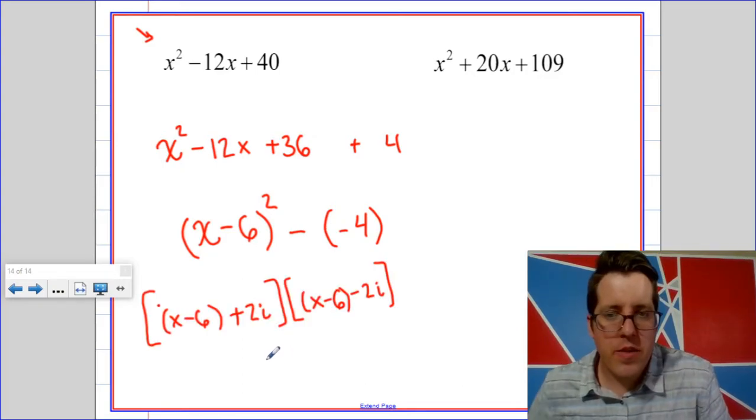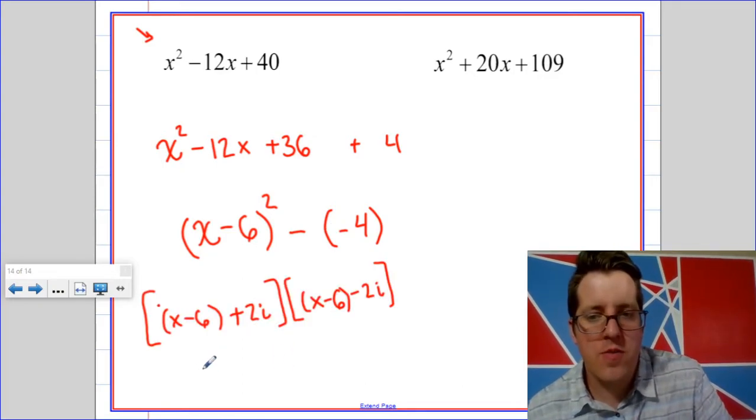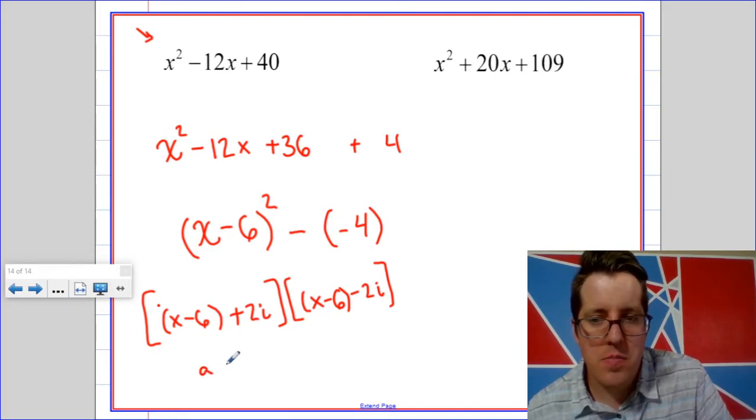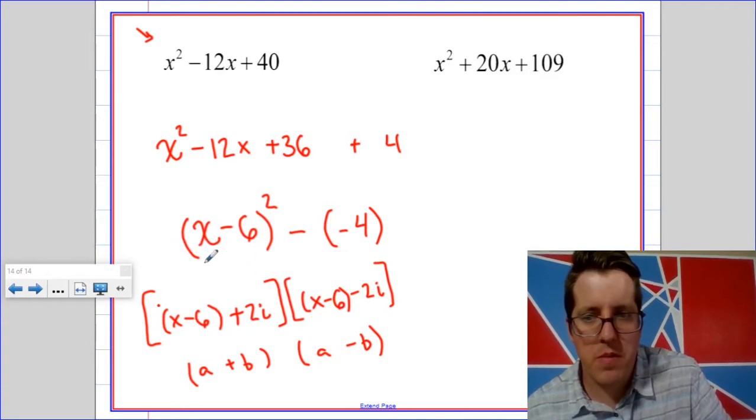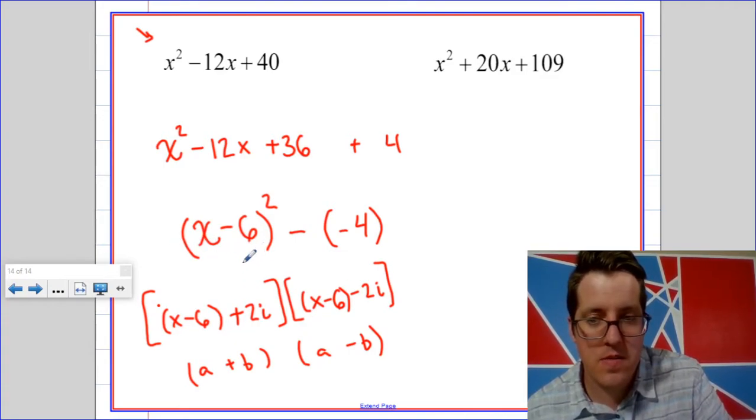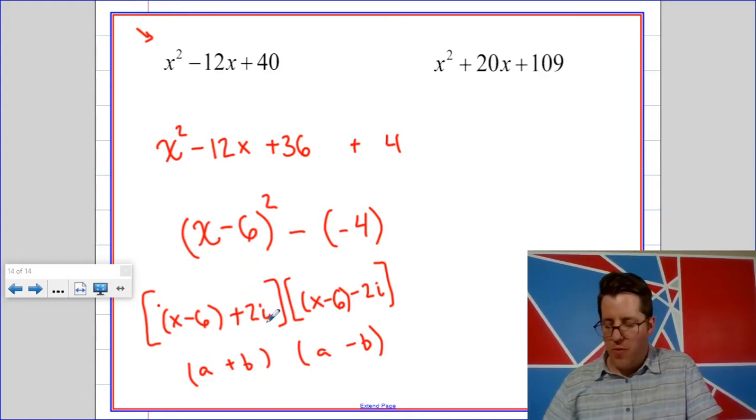We like to think of our difference of squares pattern as an a plus b times an a minus b. In this case the a, the thing being squared, is x minus six, and the b is 2i. So let's go ahead and FOIL this out to make sure that it works.